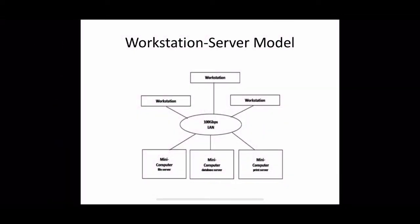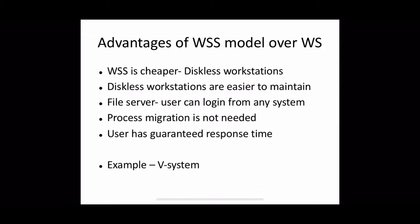Requests for services provided by special servers such as a database server or print server are forwarded to the corresponding server. The requested activity is performed by the server and the result is sent back to the user's machine. Therefore, users' processes need not be migrated to the server machines — instead, a request-response protocol is used.